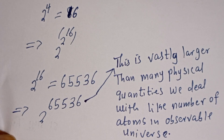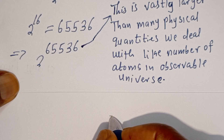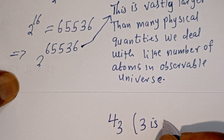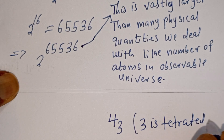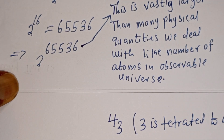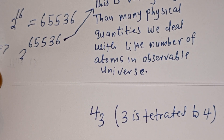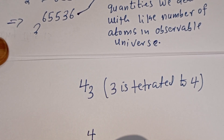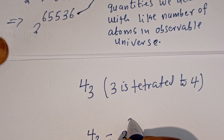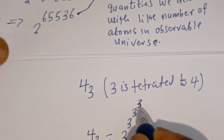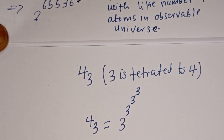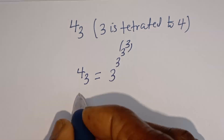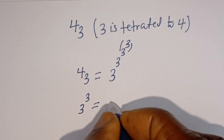Now let's consider another one. If you have three tetrated to four, this simply means three is tetrated to four. Three tetrated to four is equal to three to the power of three to the power of three to the power of three. Then we can consider the two upper exponents: three to the power of three is equal to 27.